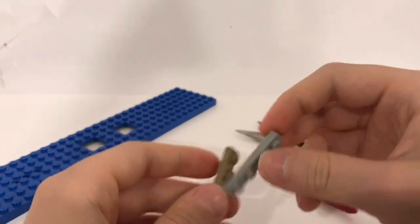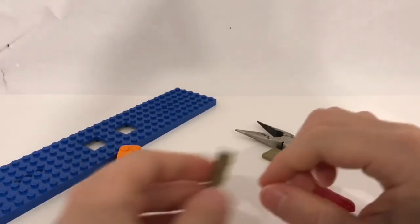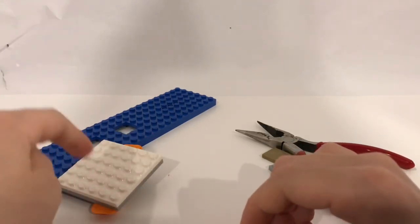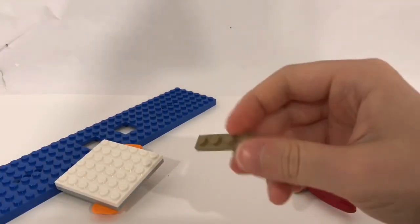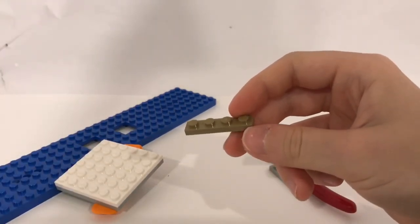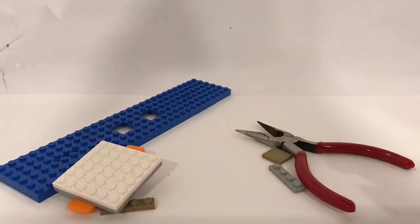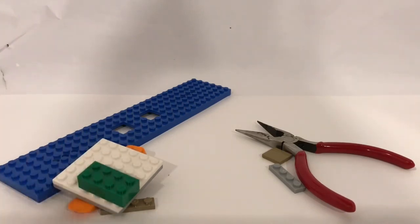Needle nose pliers also won with taking apart these. Brick separator won with this, but Lego lifter won with taking this off of here. Brick separator also won that.